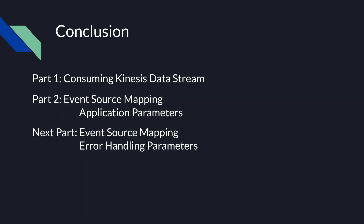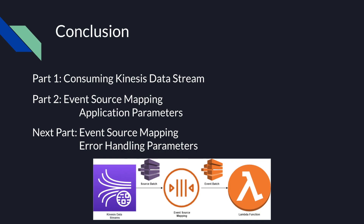That's it for the second part of the Kinesis with Lambda tutorial on event source mapping parameters. In the next video, I'll go over the different event source mapping parameters for error handling and explain the different errors that may occur. Check out other videos in this playlist to learn more about using Lambda with Kinesis. Please let me know if you have any questions below. I hope you enjoyed it and found it valuable — if you want to learn more about AWS and coding, please consider subscribing. Thanks, see you in the next video.